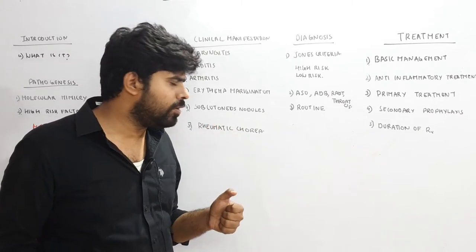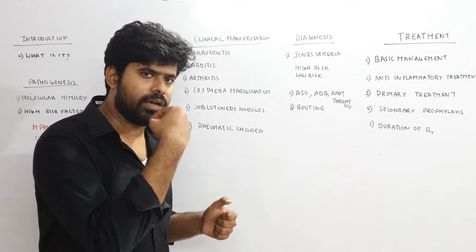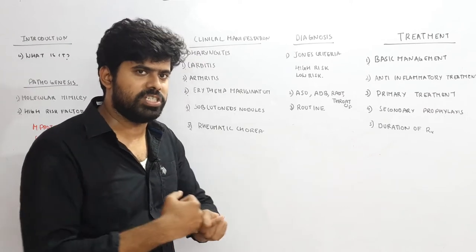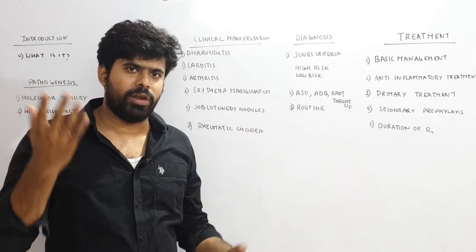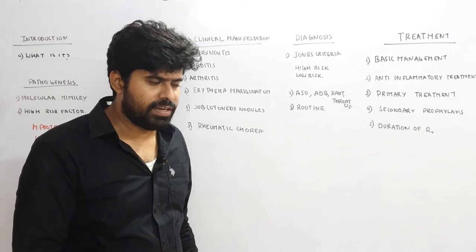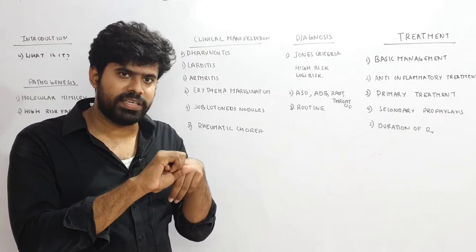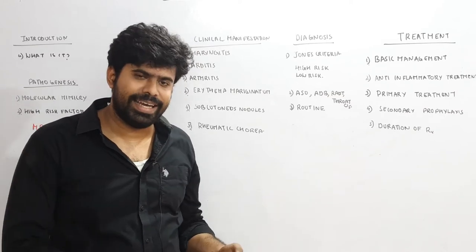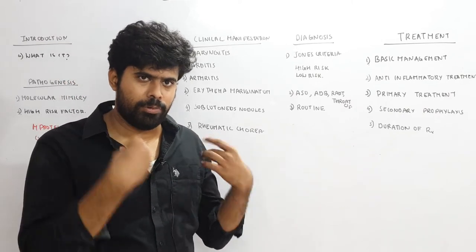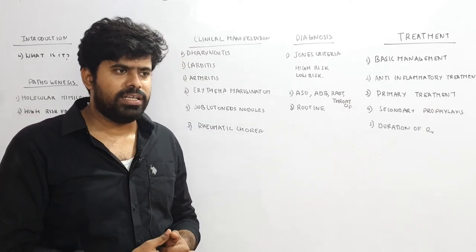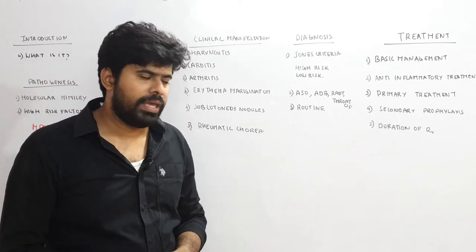Patients with rheumatic chorea show certain signs. Jack-in-the-box tongue: when the patient is asked to protrude the tongue, it goes in and comes out repeatedly. The pronator sign is positive: when asked to raise hands above the head, they go into pronation of one arm. The milkmaid's grip: when asked to tightly hold a finger, they cannot maintain grip and go for repeated squeezing. The patient's handwriting will be very poor, and on attempted walking they will stumble. The tongue on protrusion resembles a bag of worms, and the speech is jerky and staccato. Rheumatic chorea can be managed with phenobarbitone and haloperidol.